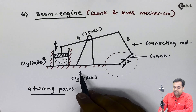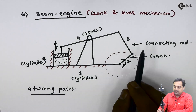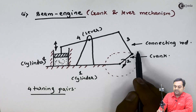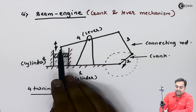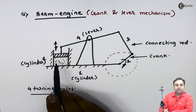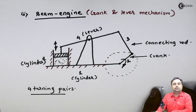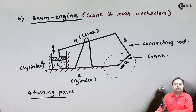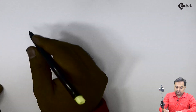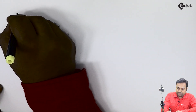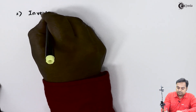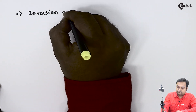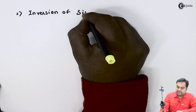Between links 1 and 2 there is a turning pair, between 2 and 3 there is a turning pair, between 3 and 4 there is a turning pair, and between 4 and 1 there is a turning pair. So this was regarding the 4-bar chain. Now let us move on to the inversion of single slider crank chain.